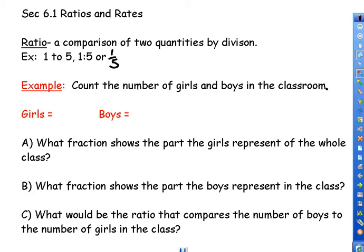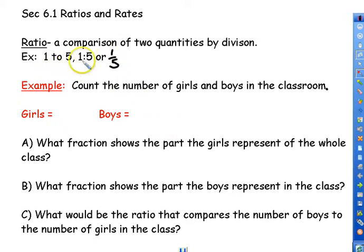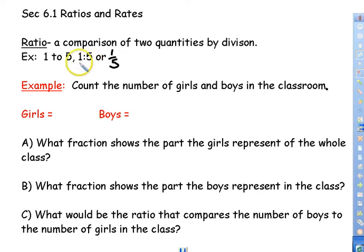Good afternoon. Today we're talking about section 6.1, which is ratios and rates. The first thing we notice is: what is a ratio? A ratio is a comparison of two quantities by division. Comparing one to five can be written as 1 to 5, 1:5, or one-fifth — all meaning one to five.